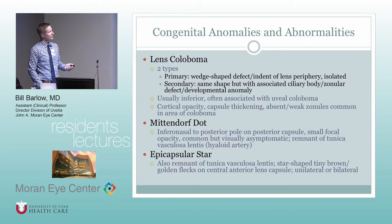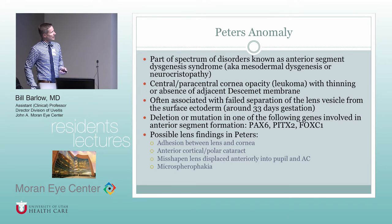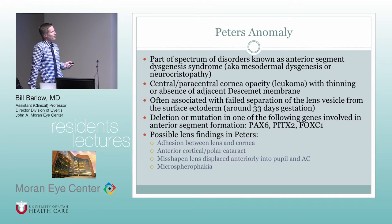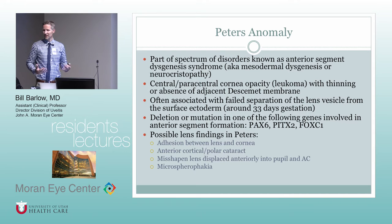From a surgical planning standpoint, when lens coloboma is present, missing zonules are usually at least a clock hour more than what you'd think on exam. Peter's anomaly involves the PAX6 gene and is part of a spectrum known as anterior segment dysgenesis. You get central or paracentral corneal opacity, possible glaucoma, and thinning or absence of Descemet's membrane. It's typically associated with failed separation of the lens vesicle from the surface ectoderm. Lens findings can include adhesion between lens and cornea, anterior cortical or polar cataract, or a misshapen lens displaced anteriorly into the pupil or anterior chamber. Microspherophakia — a classic associated finding — is a small lens with small diameter that is more spherical in shape.